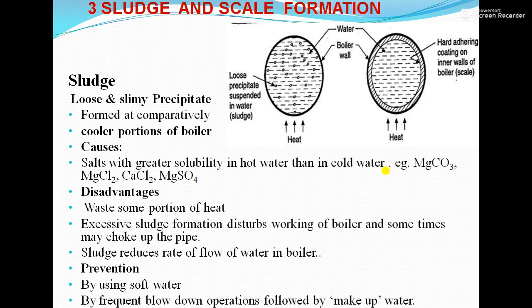What are the disadvantages of sludge? First, due to the presence of sludge, we have to heat water more to generate the required steam, meaning there is wastage of heat. Second, excessive sludge formation disturbs the working of the boiler and sometimes it may choke up the pipe. Third, sludge reduces the flow rate of water in the boiler.